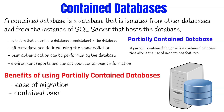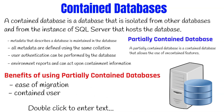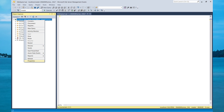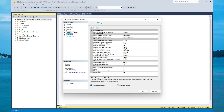Let's take a look at an example of how you can enable containment and create a contained database. The first step is enabling containment at the instance level. Right-click on the instance, select Properties, select Advanced, and then where it says 'Enable Contained Databases', change the status from false to true, then select OK.